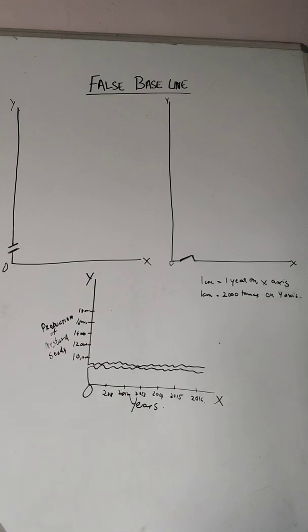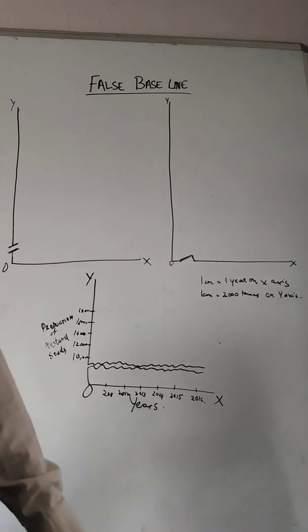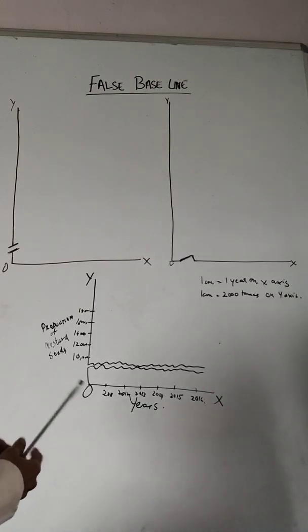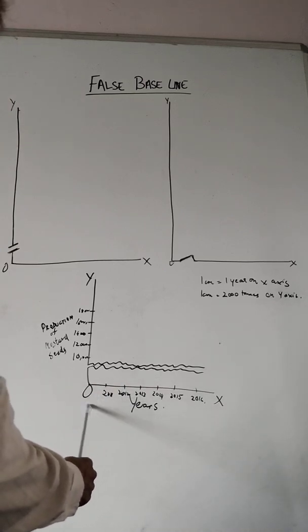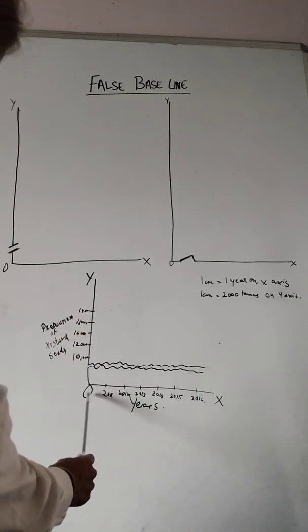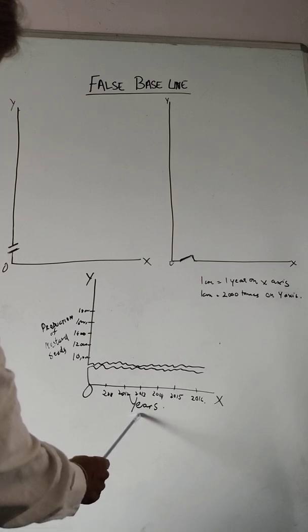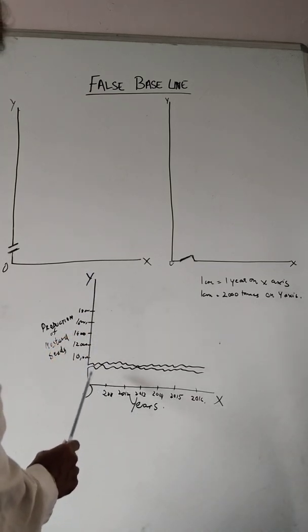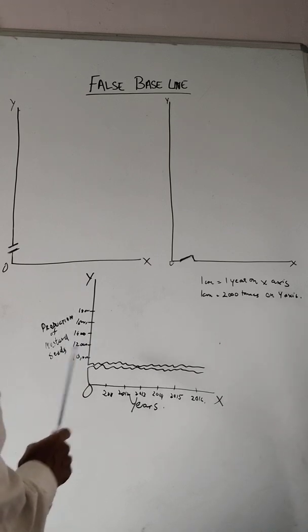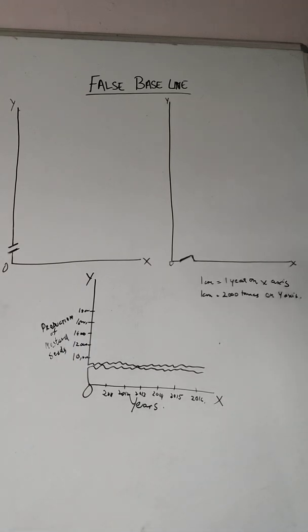So we sometimes draw these exact horizontal lines. Look here for example. We have on the x-axis the years given, and on the y-axis is production. Now the production itself begins from say 10,000.